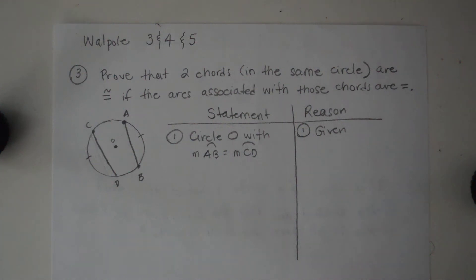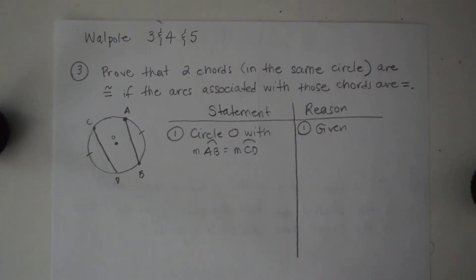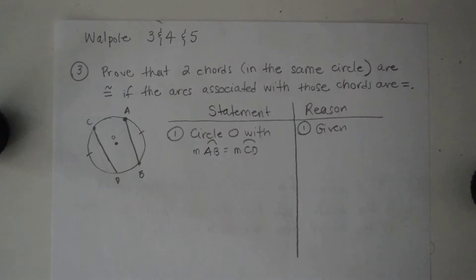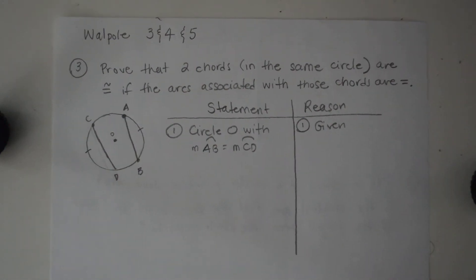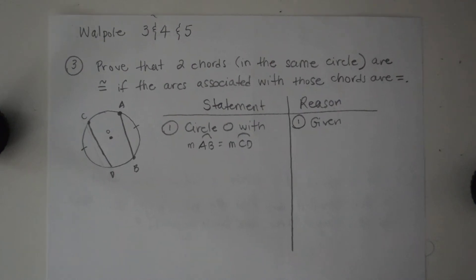This is a video for Walpole numbers 3, 4, and 5. Problems 3 and 4 are the proofs, but I've gotten homework turned in already that shows that maybe 5 is also going to be a problem, so we'll take a look at that too.